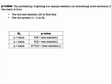We're going to be finding a P-value — the probability of getting our sample statistic or something more extreme if the claim is true. We use the test statistic Z to find this. If the alternative hypothesis is less than, we find P(Z < z). If greater than, P(Z > z). If not equal to, we use 2 times P(Z > |z|), because not equal to has both tails.